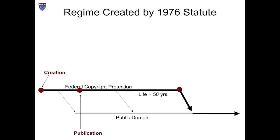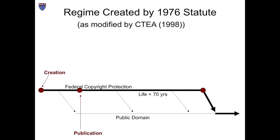The 1976 general reform of the copyright statute, which became effective at the start of 1978, instituted a radically new regime. Works created thereafter acquired federal copyright protection immediately, which lasted for the life of the author plus 50 years. The Copyright Term Extension Act in 1998 extended that term to its current duration: life of the author plus 70 years.